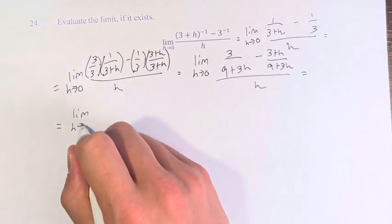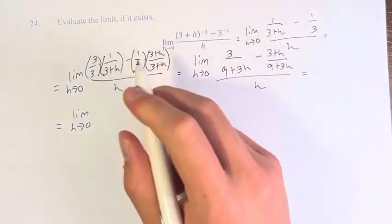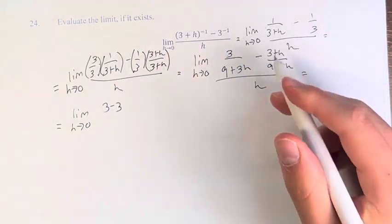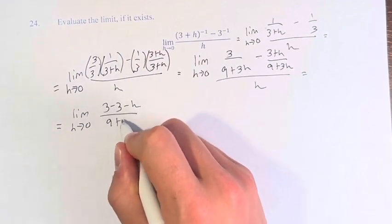This gives us the limit as h approaches 0. Now we can subtract these, 3 minus 3, don't forget to distribute the negative, minus h over 9 plus 3h.